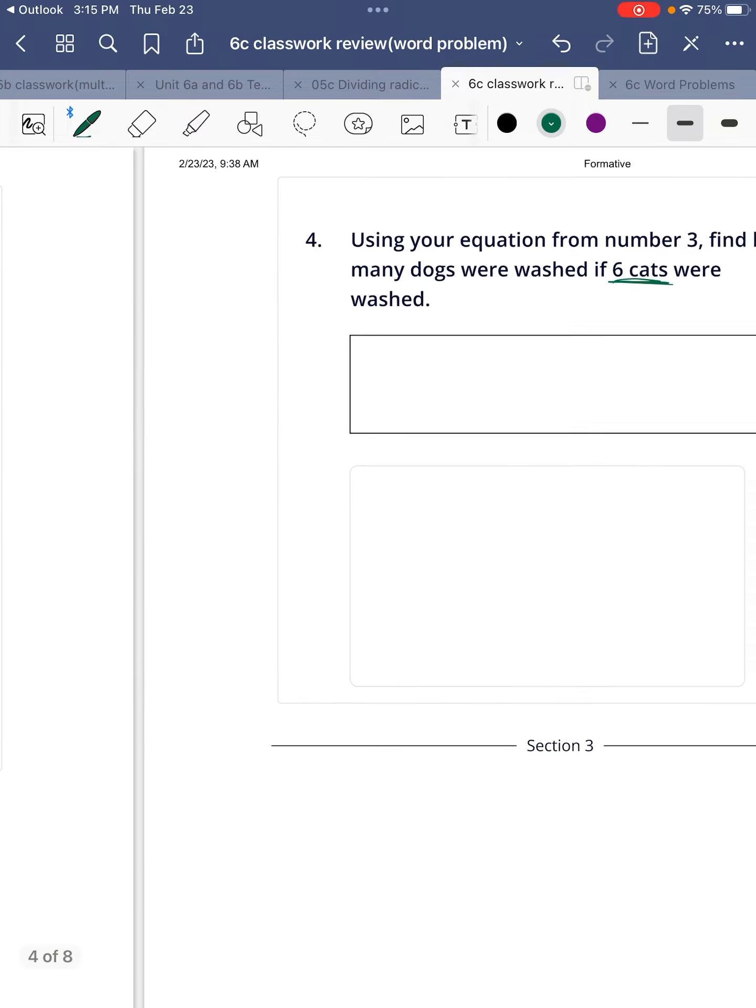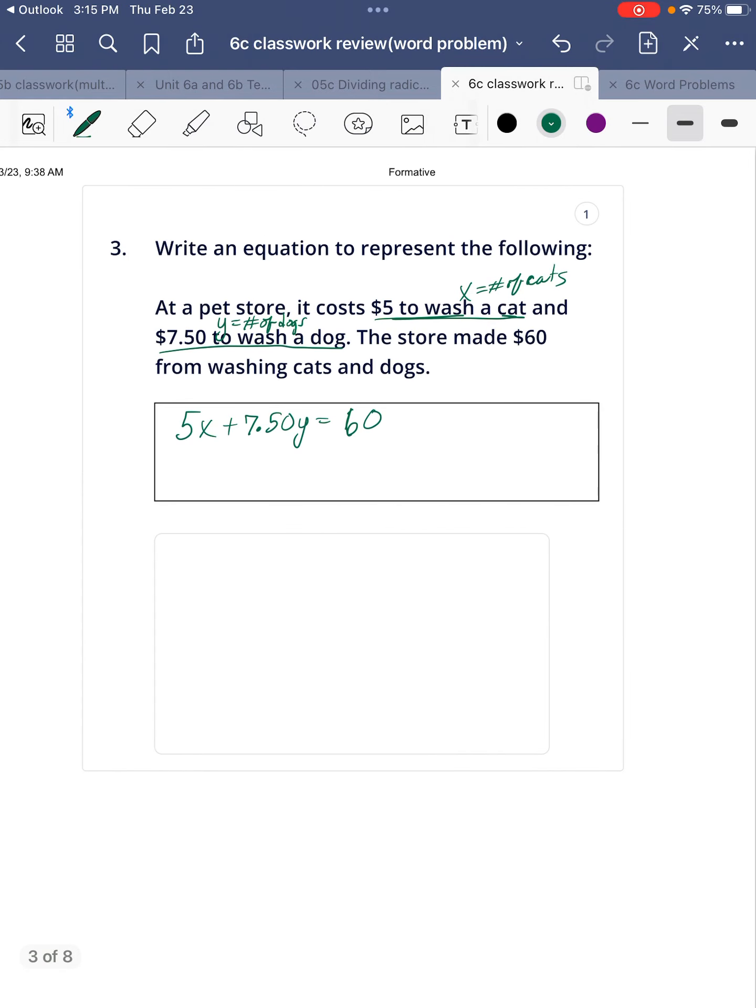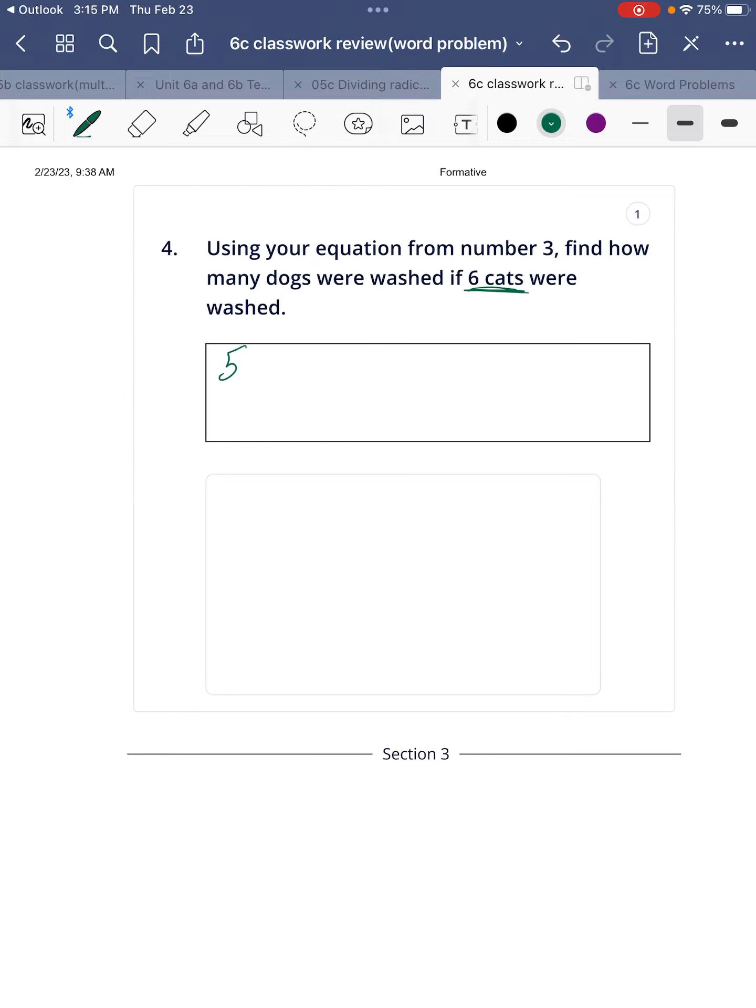If we wash six cats, how many dogs can we have? So I'm going to replace the x with 6. So 5 times 6 plus $7.50x equals 60. We have 30 plus $7.50x equals 60.